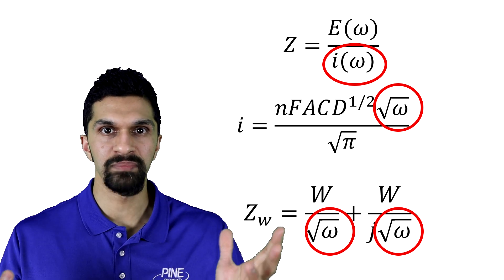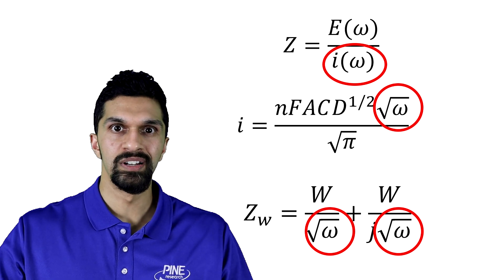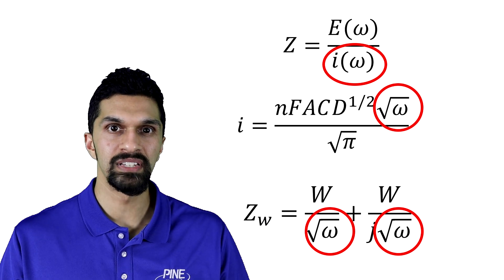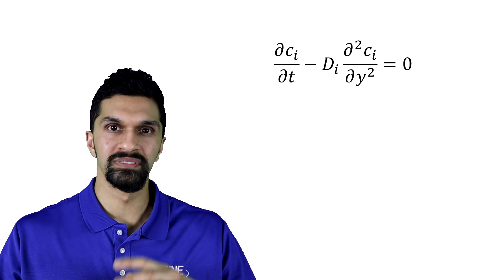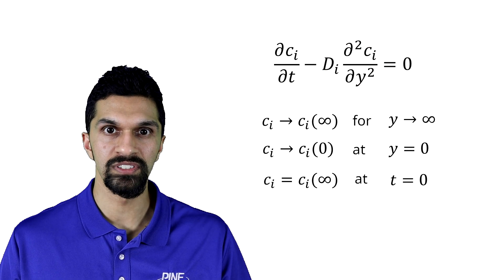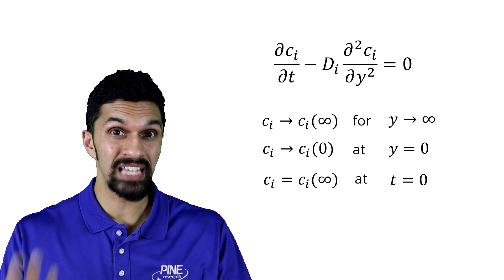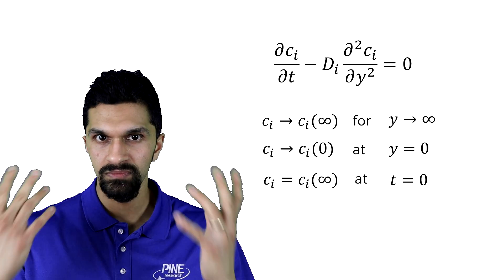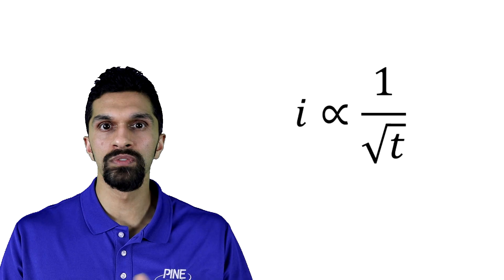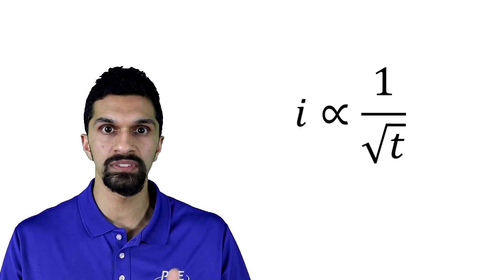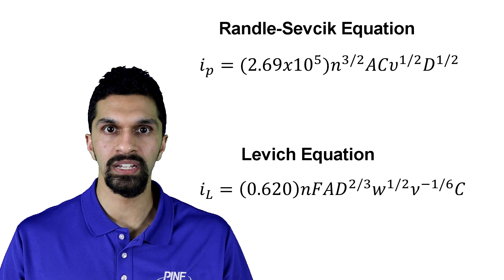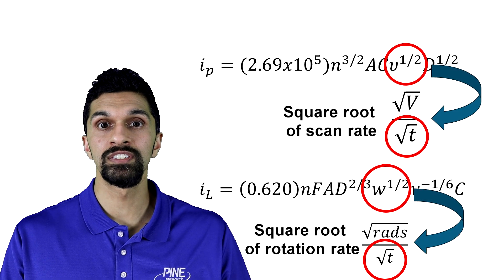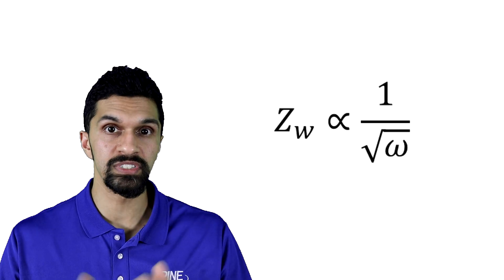Now, this is not mathematically rigorous. The math involved in deriving the Warburg impedance involves solving a second-order differential equation with special boundary conditions — the same procedure used to derive the Cottrell equation. But what is important is that the 1 over the square root of time dependence on the current is observed in many different electrochemical techniques, and in EIS, this ends up being a 1 over the square root of frequency dependence. So we can start to think about Warburg impedance conceptually from this chronoamperometry experiment.